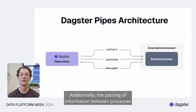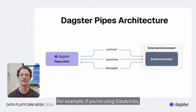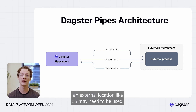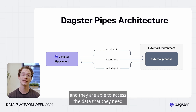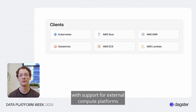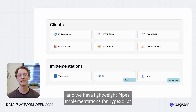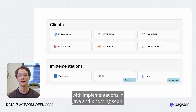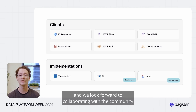The passing of information between processes can occur in multiple ways depending on the external environment. For example, if you're using Databricks, context might be supplied as notebook parameters, or an external location like S3 may be used. Regardless, the handling is completely hidden to the end user. We already have a variety of clients supporting Databricks, Kubernetes, ECS, Lambda, and EMR, plus lightweight Pipes implementations for TypeScript, with Java and R coming soon. Because the communication protocol is minimal, we expect implementations to grow rapidly and look forward to collaborating with the community.